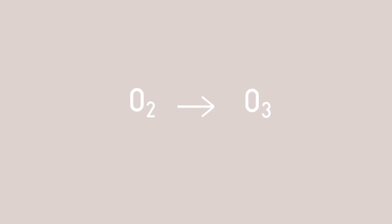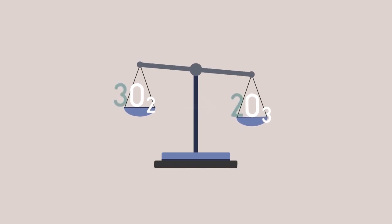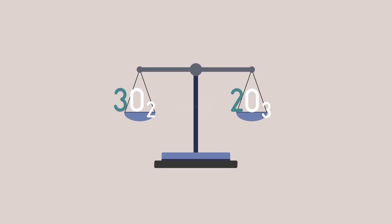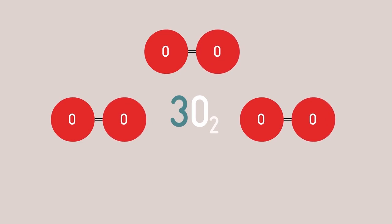Often when you write out chemical reactions, the atoms do not balance straight away. You need to balance equations to conserve atoms. You do this by putting numbers in front. Here we start off with 3O2 molecules, six oxygens overall in the formula. You can work out how many atoms there are by doing three times the subscript or little number on the oxygen, which is two. Three times two is six.